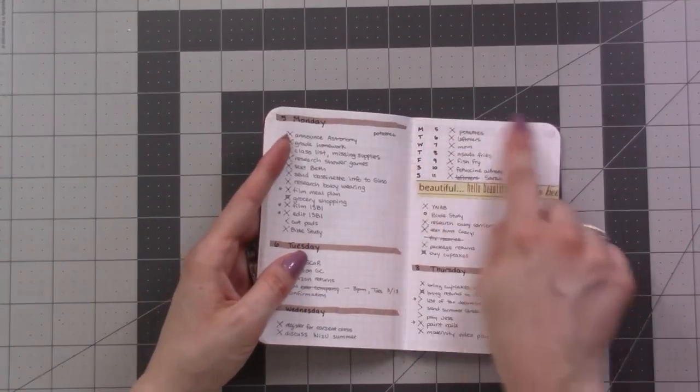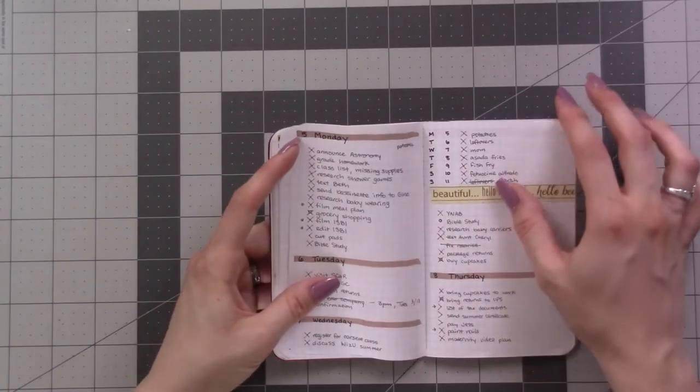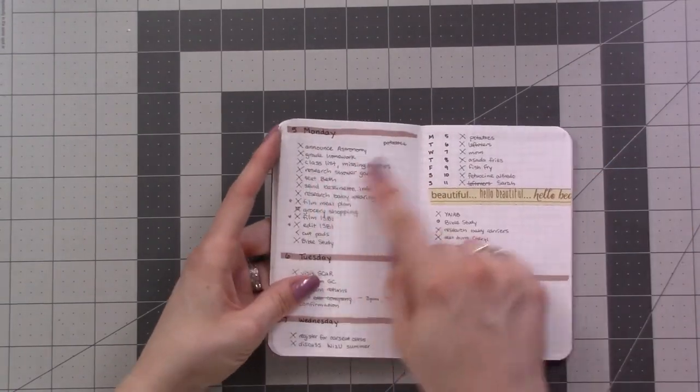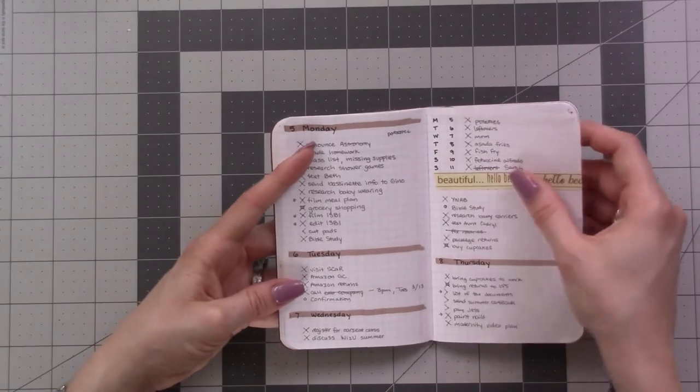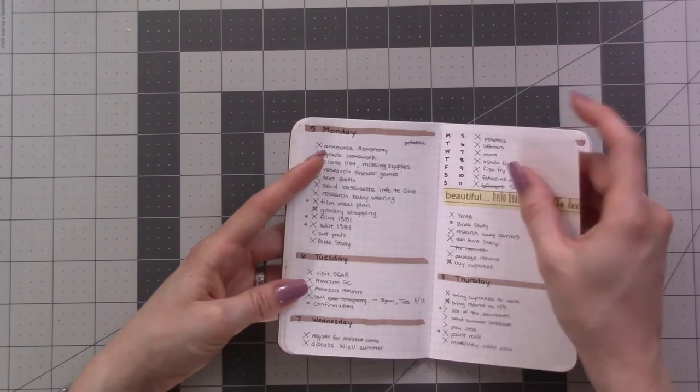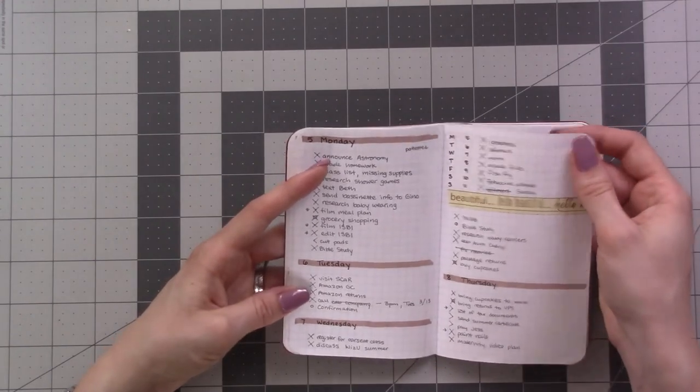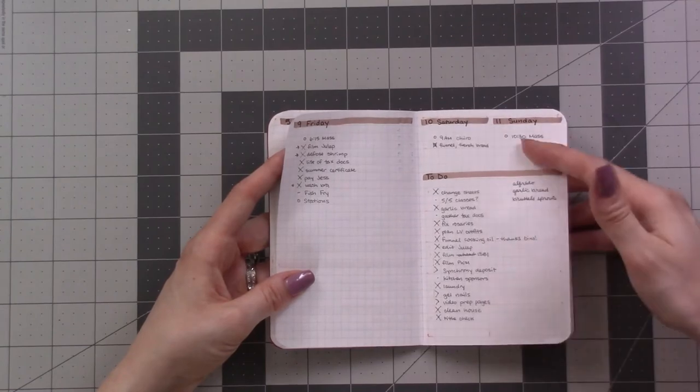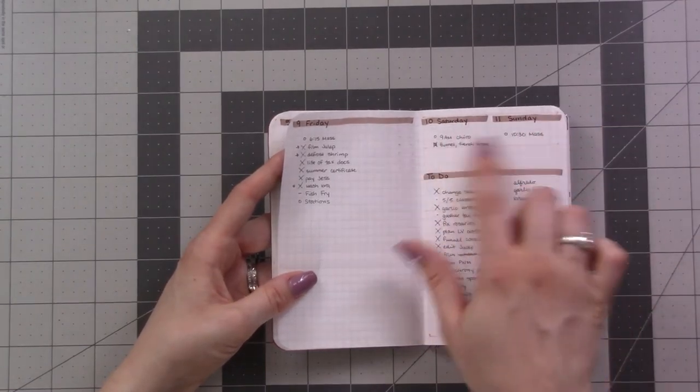Pretty much the same layout. I put my meal planning up here. I think this is the week that I did meal planning as a video, so I didn't make room for it up here before I filmed that. But it was fine, I just crossed the things out as I ate them so that we knew that it happened. Same weekend to-do list, event stuff.